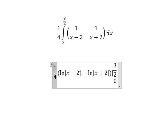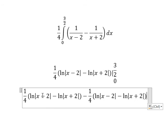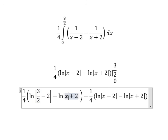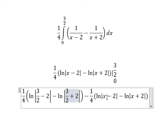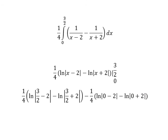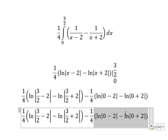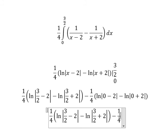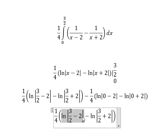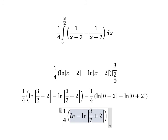Now we have the final answer. I will put 3 over 2 in here and number 0 in here. So ln(2) minus ln(2) — they cancel because that is about 0. This one we have ln of 1 over 2.